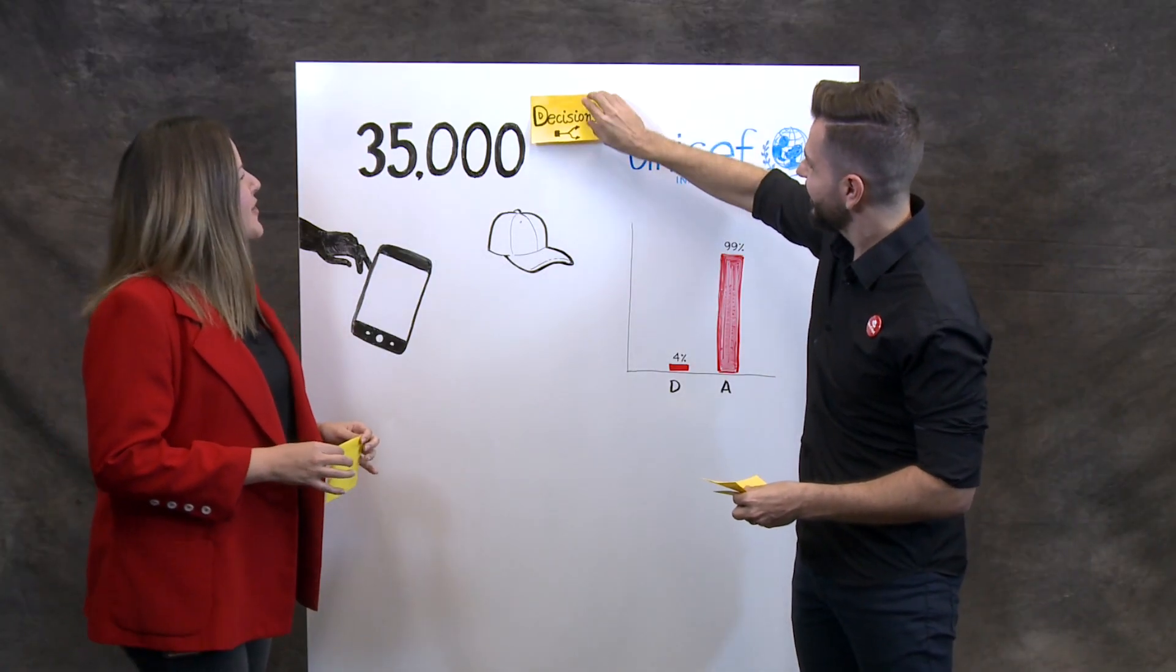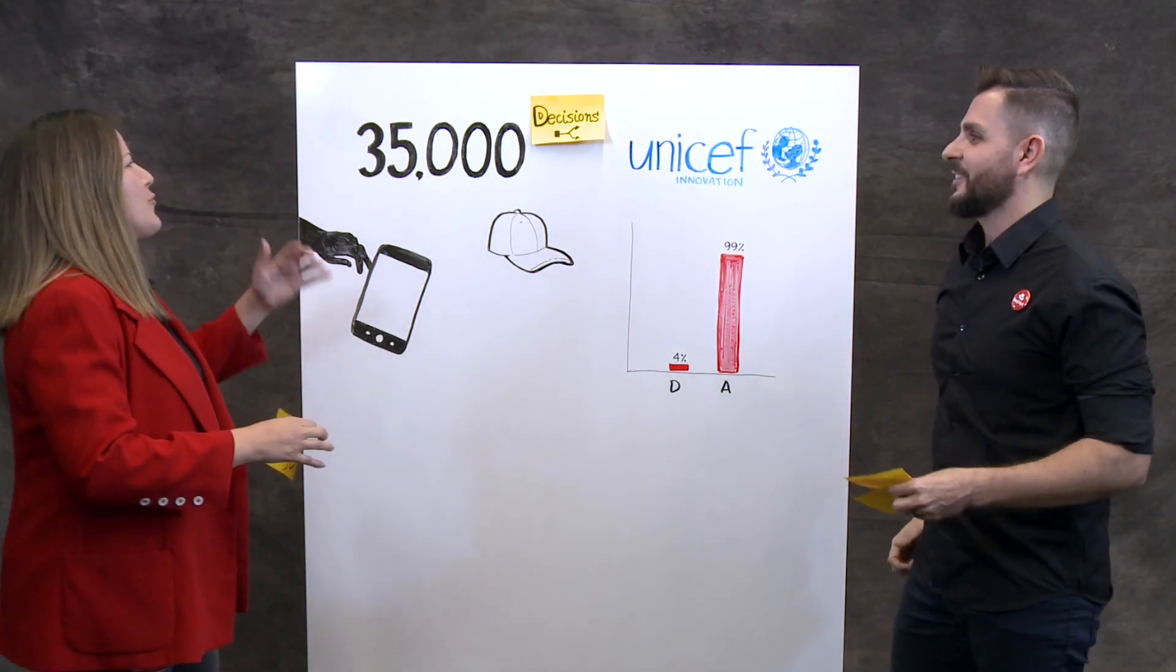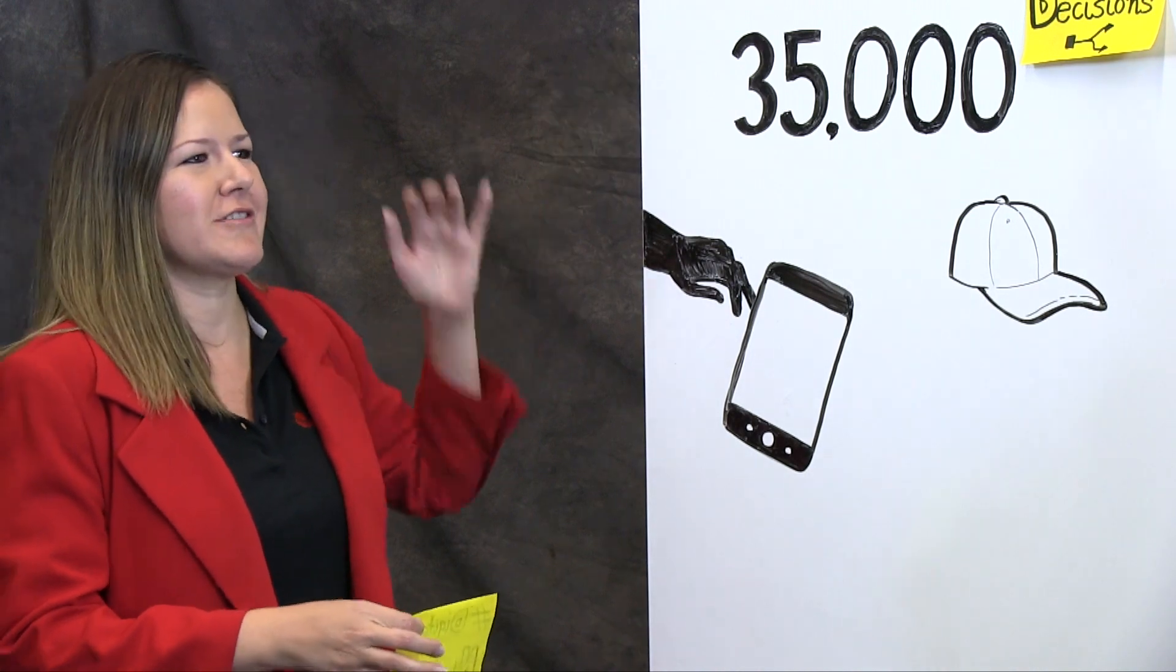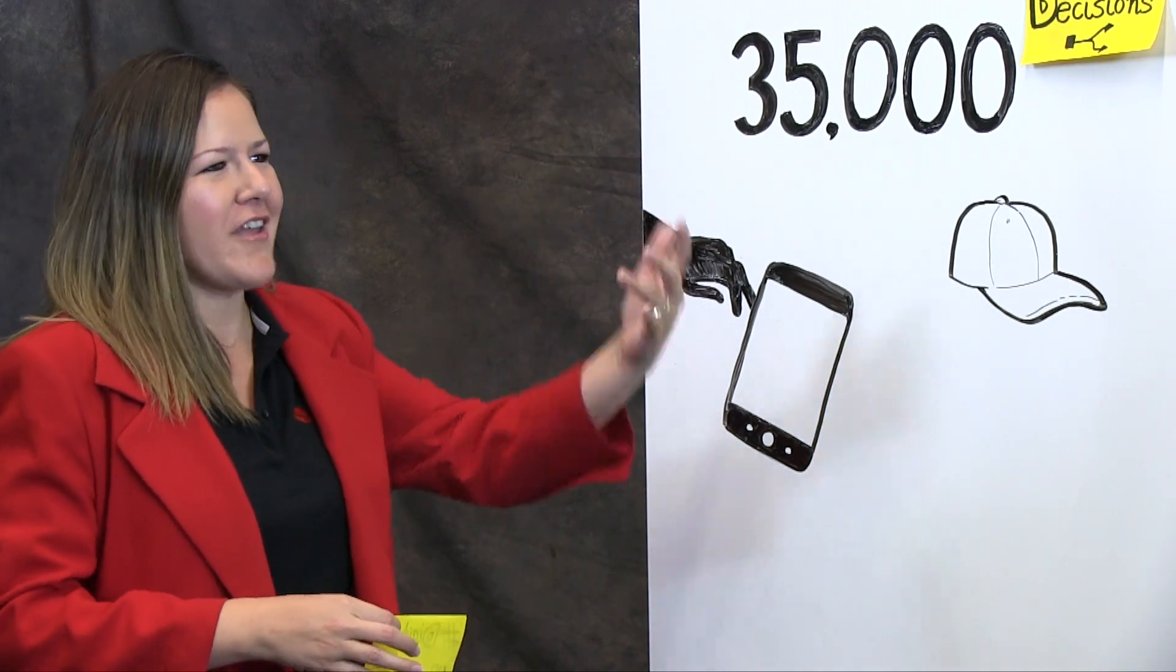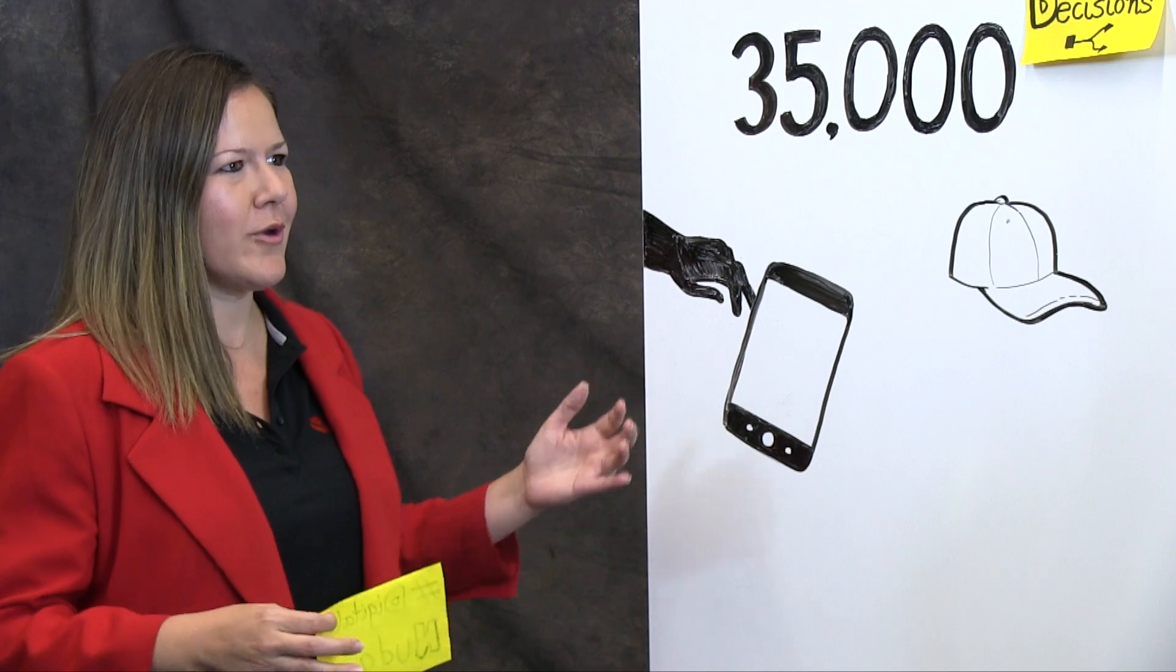That's amazing. So tell me something. I actually don't remember the 35,000 decisions that I made today and every other second. How does that work?